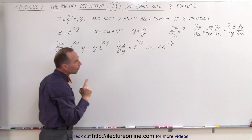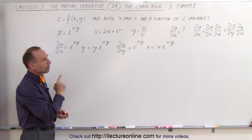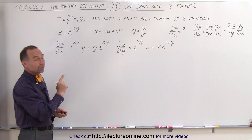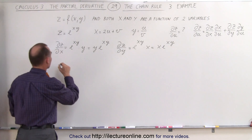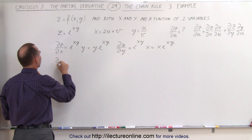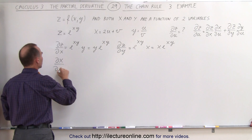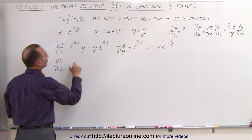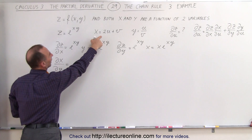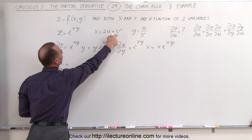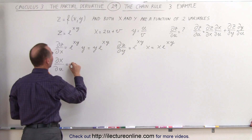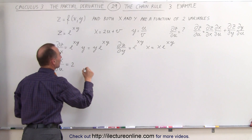Now we take the partial derivative of x with respect to u. The partial derivative of x with respect to u — v would be considered a constant here — is equal to 2.